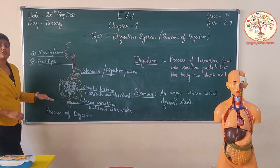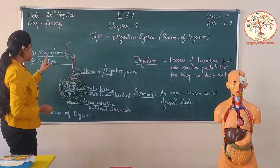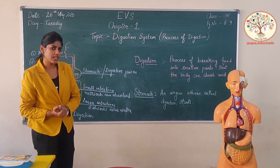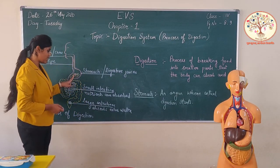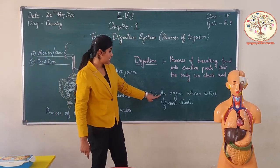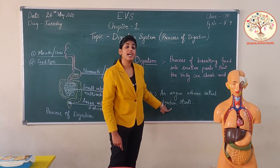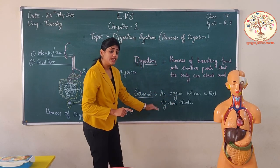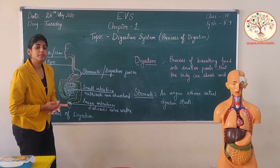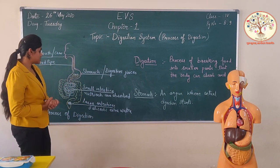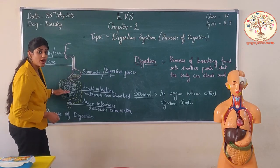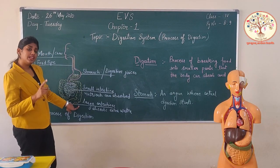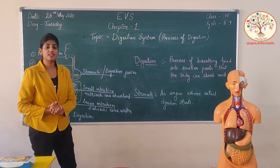So this was the process of digestion. Students, when we started eating food, from where does the actual digestion start? It starts from the stomach. All the process starts from our mouth, but in the stomach the digestive juices mix and digestion truly begins. After the stomach, the food goes to the small intestine where nutrients are absorbed, then to the large intestine, and the body releases the waste.